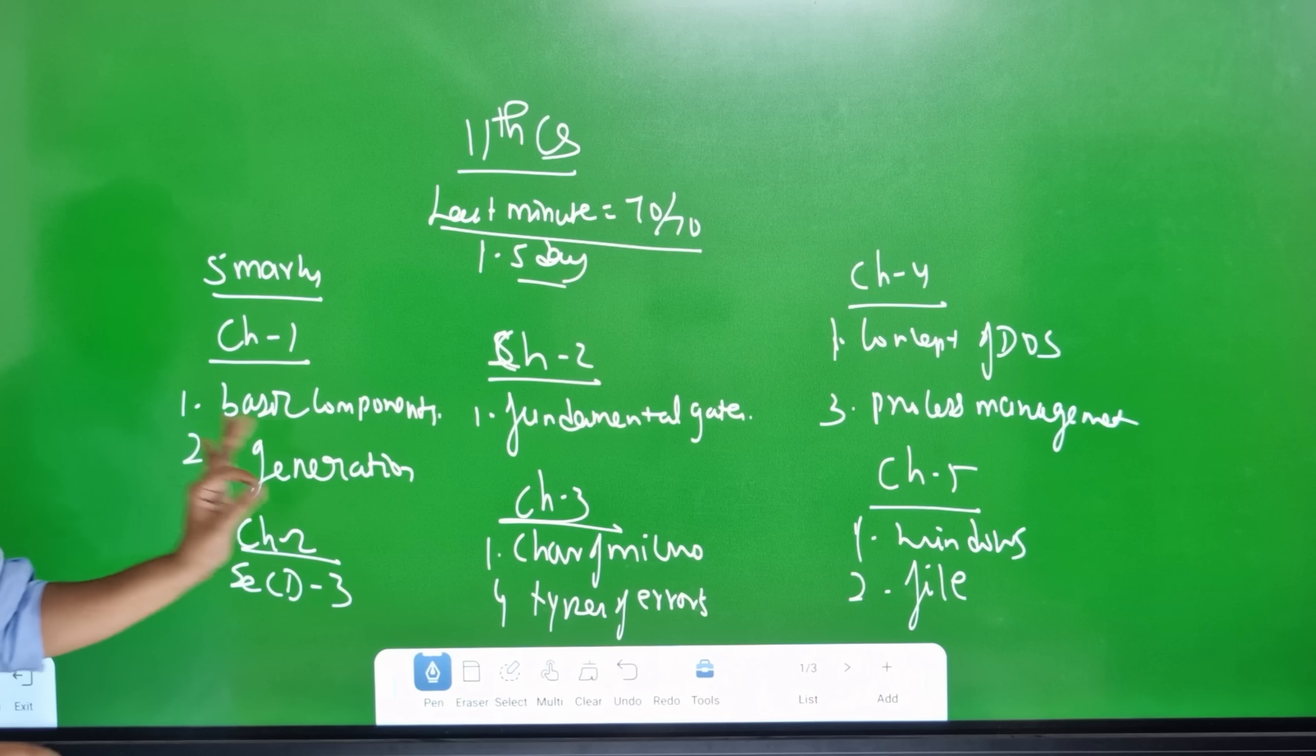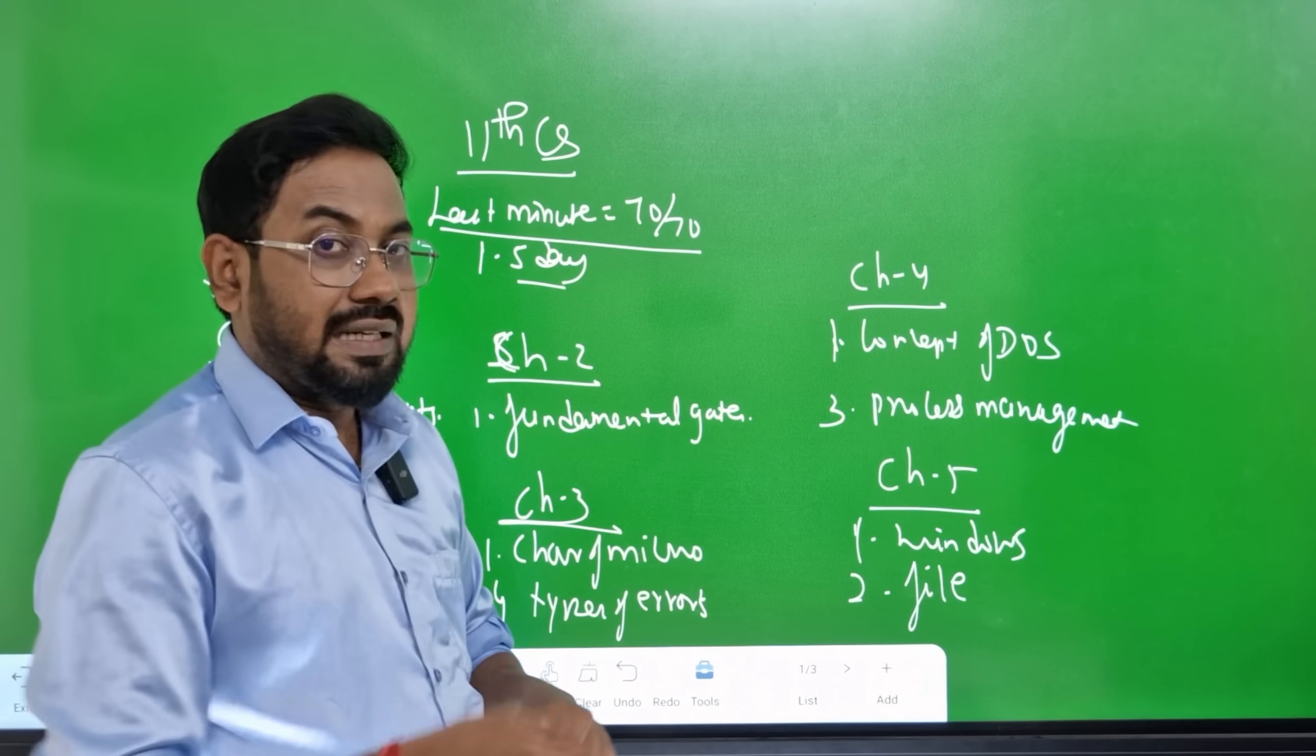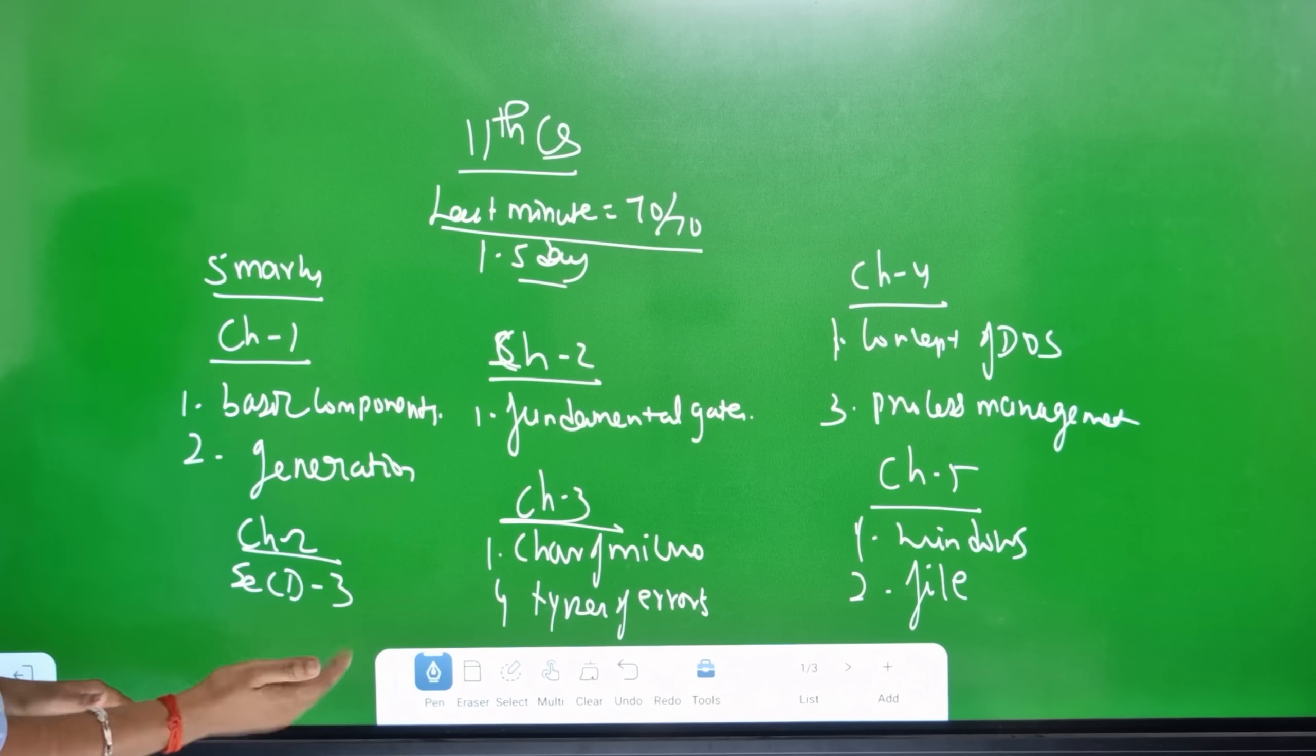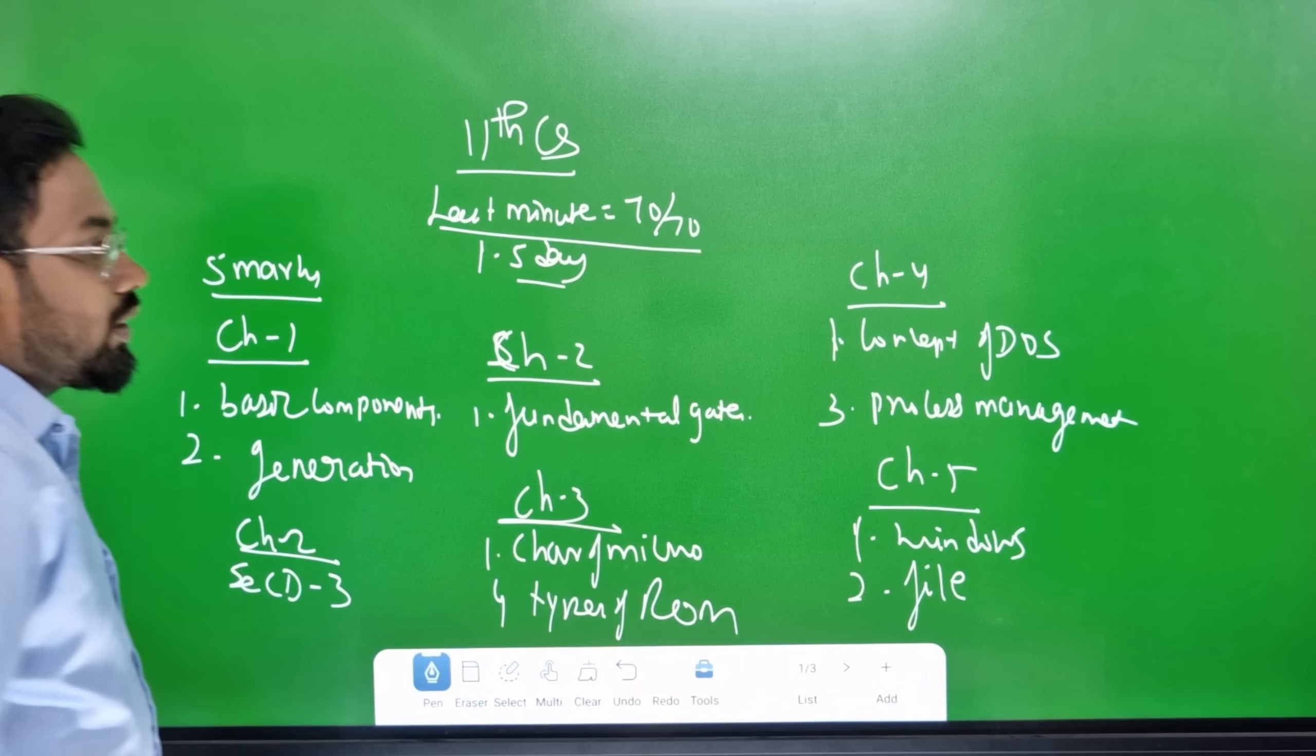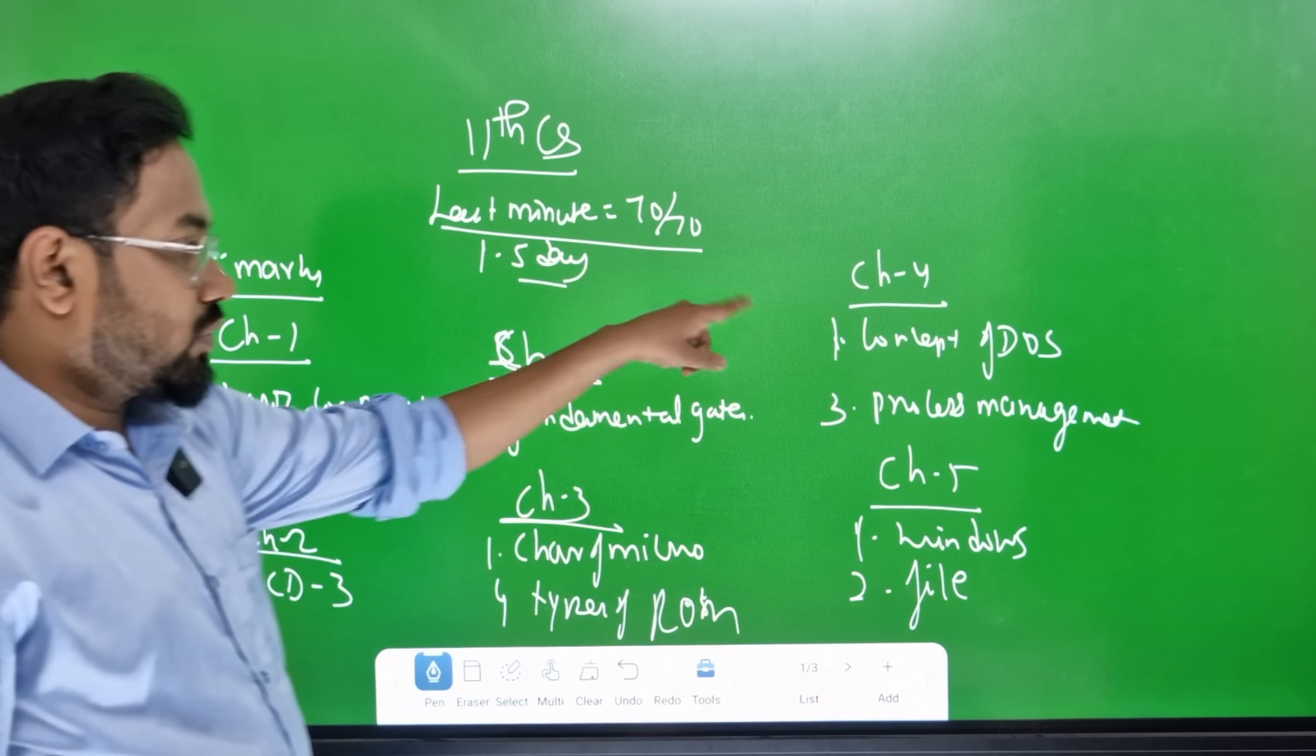Basic Compliance is Generation. Book back, first one, second one. Tamil media Chapter 2 is Fundamental Gates Derivative Gates. Chapter 3 is types of ROM. Chapter 4 is Concept of DOS Distributed Operating System Process Management, first one.